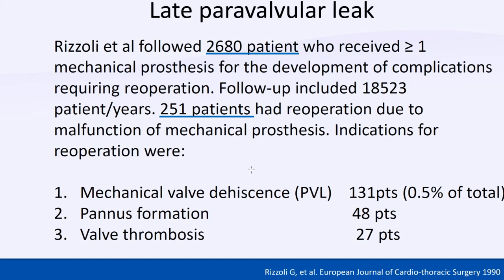Late paravalvular leak is due to loss of tissue because of calcification, debridement, and dehiscence of the valve or endocarditis. In a study from Italy, 2,680 patients with mechanical valve replacement were followed for a mean of about six years. Out of these 2,680, 251 had re-operation during follow-up, and 151 of those had paravalvular leak or dehiscence of the valve. Late dehiscence of the valve is about 0.5% of all mechanical valve replacements.